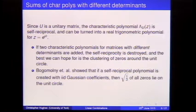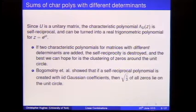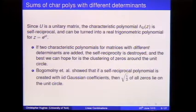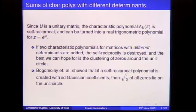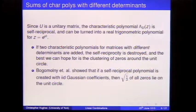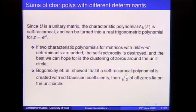A further motivation comes from Bogomolny, Bohigas, and Leboeuf, who, motivated by semi-classical approximation of quantum systems, studied self-inversive polynomials where the first half of the coefficients are chosen from a Gaussian distribution independently, and the second half are fixed by self-inversiveness. They showed that one over square root of three of the zeros lie on the unit circle.